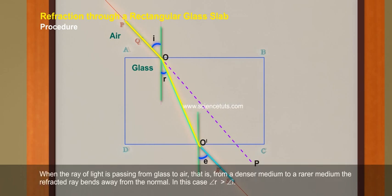When the ray of light is passing from glass to air, that is, from a denser medium to a rarer medium, the refracted ray bends away from the normal. In this case, angle R greater than angle I.